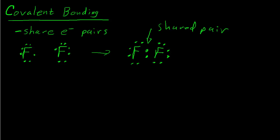If we count the electrons around any one fluorine atom, counting the six unshared electrons and then the shared pair — because they're sharing, we get to count them as belonging to both the right-hand and left-hand fluorine — we get to eight. So each fluorine will now have eight electrons around it. That's an octet, and that's what we mean by a covalent bond.